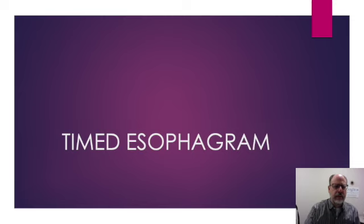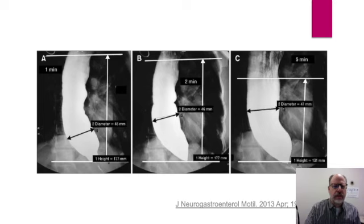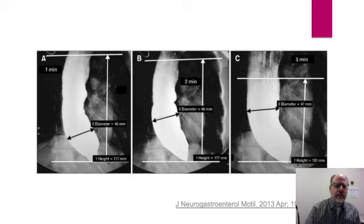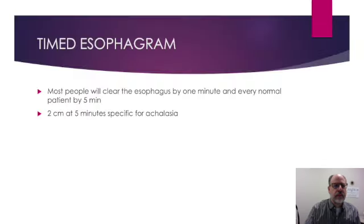Often the diagnosis is made with a timed esophagram. A timed esophagram is performed by administering a fixed amount of barium while the patient is in the upright position. Serial images are obtained typically at one minute, two minutes, and five minutes. The diameter of the distended esophagus as well as the height of the barium column from the gastroesophageal junction is measured on these serial images. Most people will clear the esophagus by one minute, and every normal patient will have complete emptying by five minutes. A column greater than two centimeters at five minutes is a specific finding of achalasia.